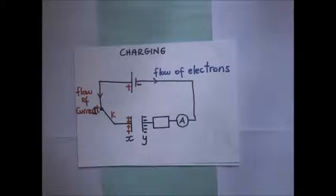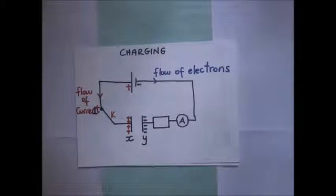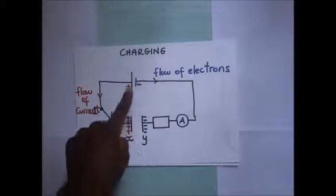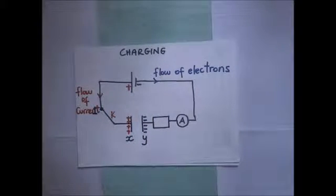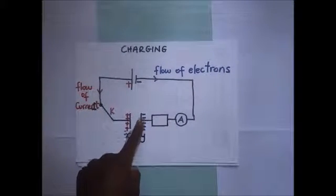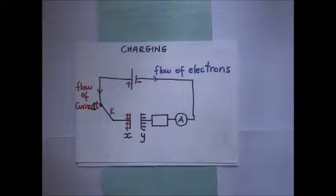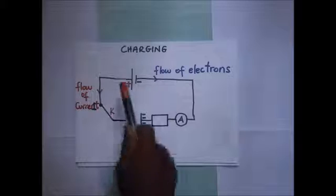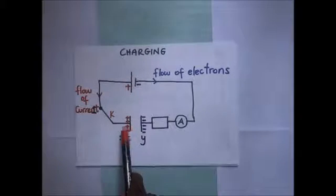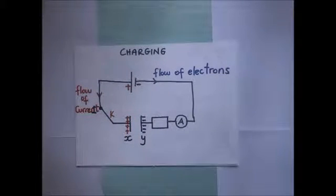Energy stored in a charged capacitor. Previously we talked about how we charge a capacitor — when we put a capacitor in series with a resistor, connect an ammeter, and connect this to a source of EMF. The negative terminal repels electrons, so electrons accumulate on one plate. The positive terminal attracts electrons from the other plate, leaving an excess of positive charges there.